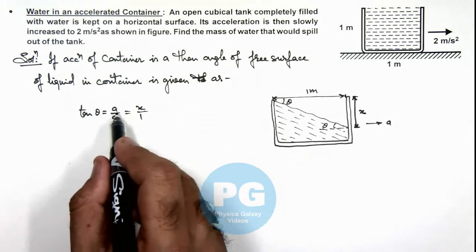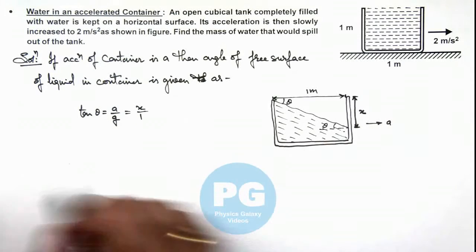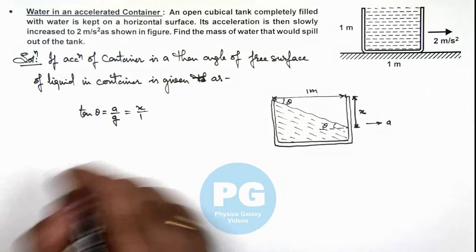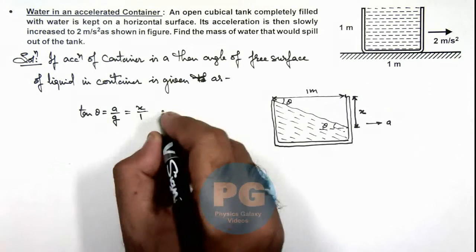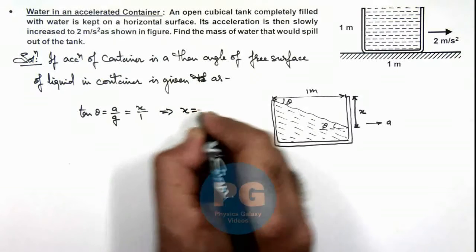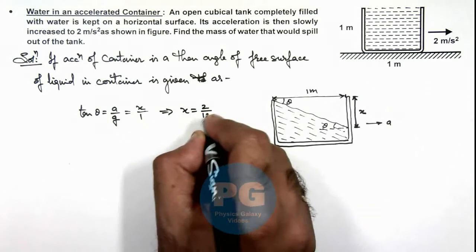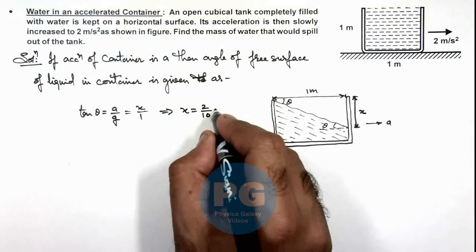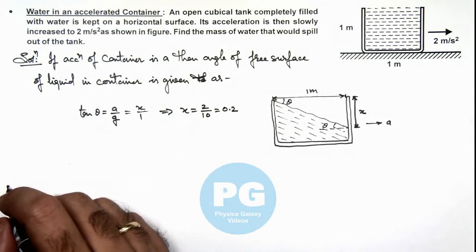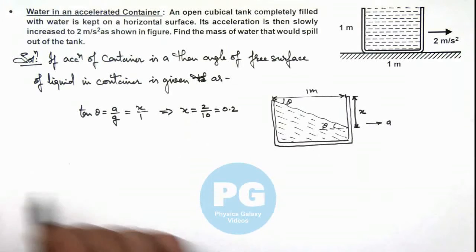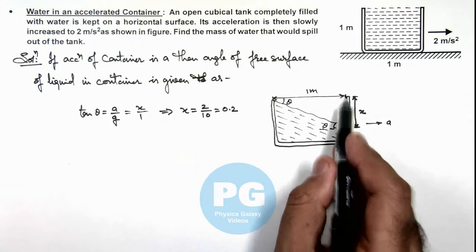The value of ay we are provided is 2 meters per second squared, and g we can take as 10. So in this situation, the value of x we are getting is 2 by 10, which equals 0.2 meters. This is the value of x to which the level will get depressed on the right wall.